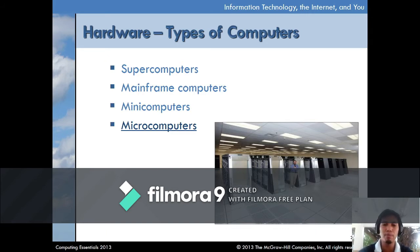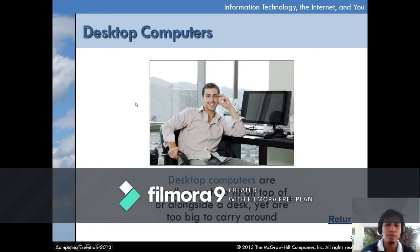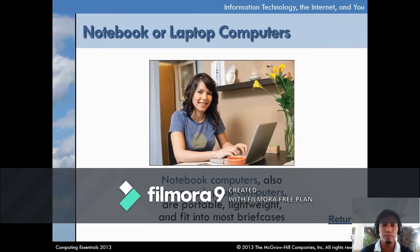Microcomputers are the least powerful but most widely used and fastest-growing type — they also include handheld computers and smartphones. Types of microcomputers include desktop computers, which are small enough to fit on or alongside a desk but too big to carry around. Media center system units are used for entertainment and blur the line between desktop computers and dedicated entertainment devices. Notebook or laptop computers are commonly used because of their portable and lightweight characteristics — they fit into most briefcases or bags.